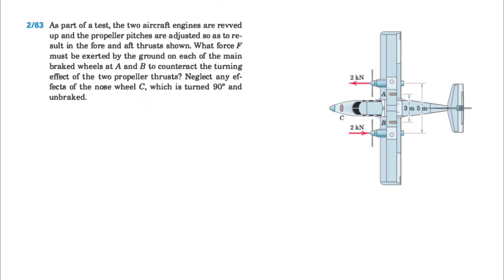The question is asking what force F must be exerted by the ground on each wheel at point A and B to counteract the turning effect of the two propellers. We have a note at the end of the question that we can neglect the effects of the nose wheel at C, which is turned 90 degrees, so we won't consider any force at point C.